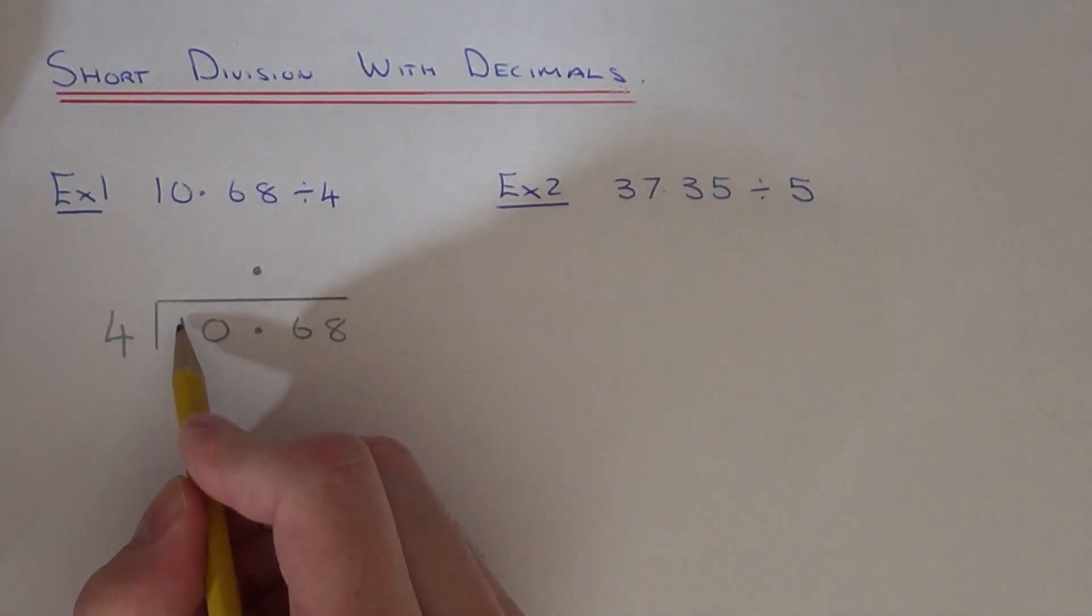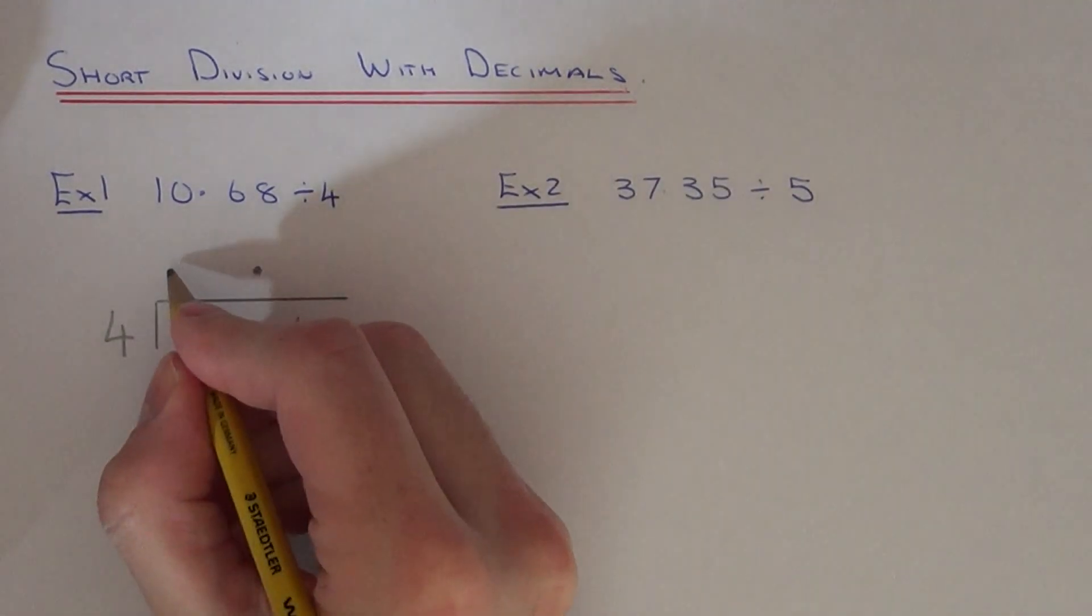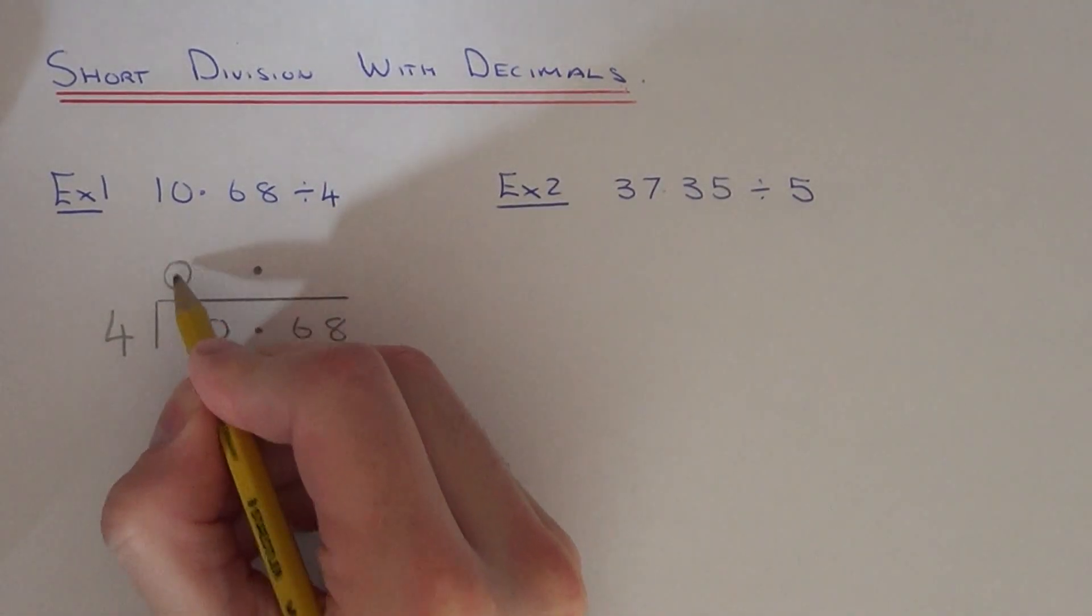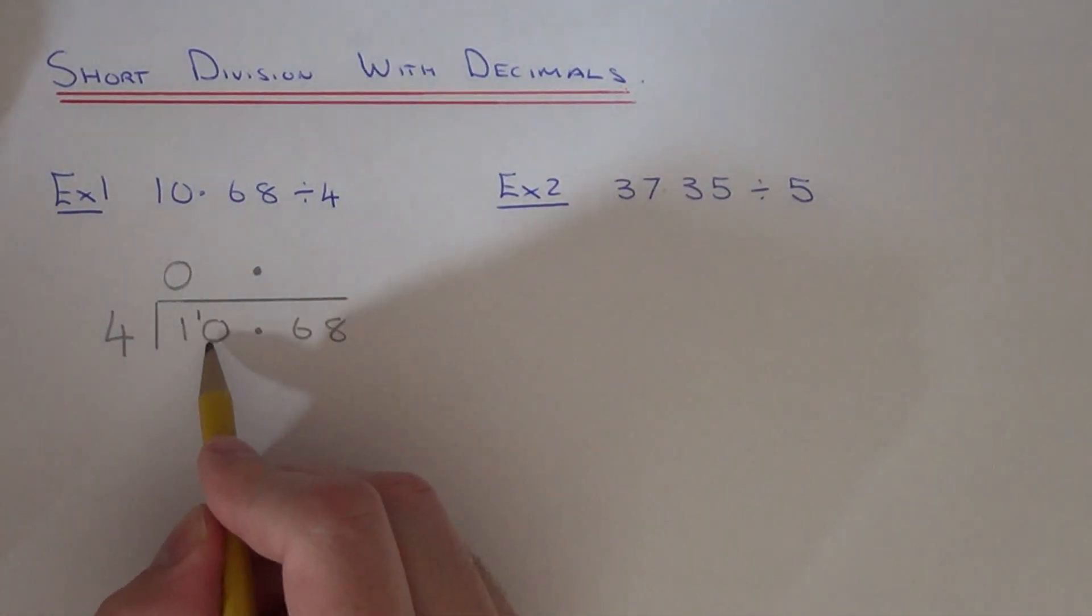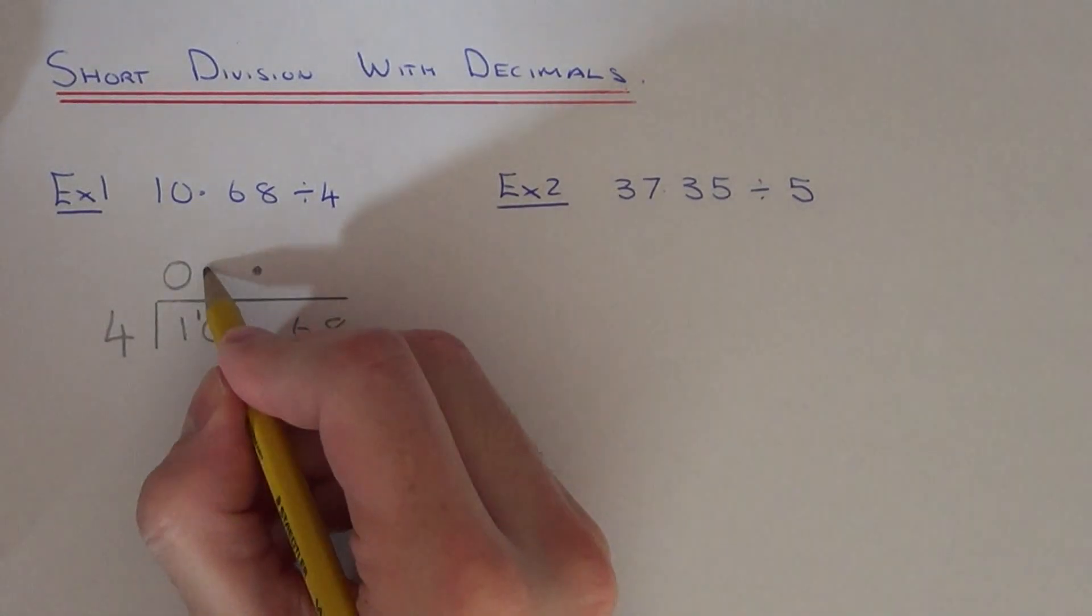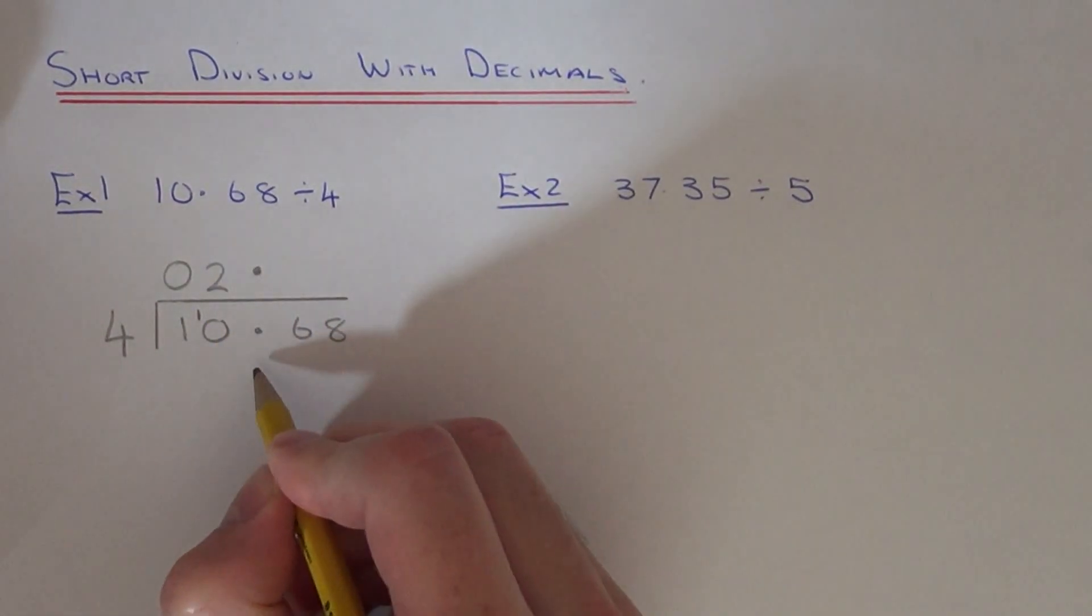First of all, do 1 divided by 4. That doesn't go, so it will be 0 remainder 1. Put that 1 by the 0. Then we've got 10 divided by 4. That is 2 with a remainder of 2.